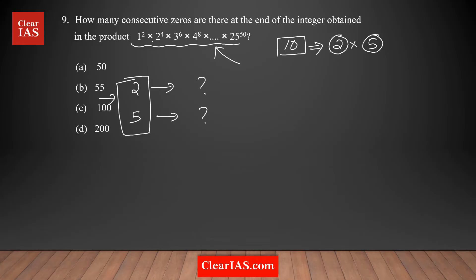Looking at the product, there will be enough 2s — for example, 2 to the power 4, and 4 to the power 8. Every alternate number contributes 2s, so there are definitely enough 2s to combine with 5s. What we are really concerned about is how many 5s are there in the product — that will give us the answer. There are enough 2s, so we don't need to worry about them.